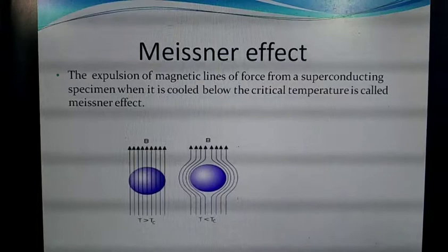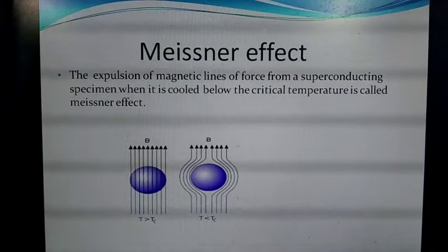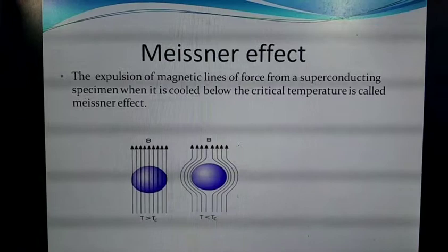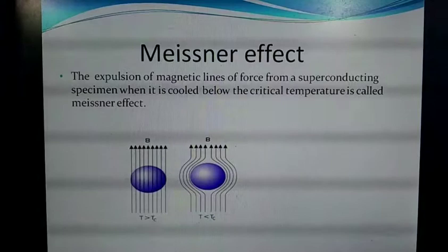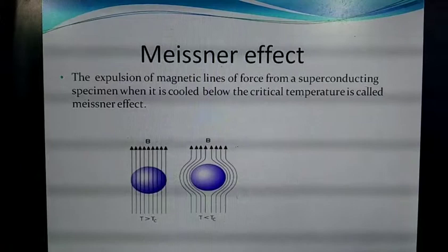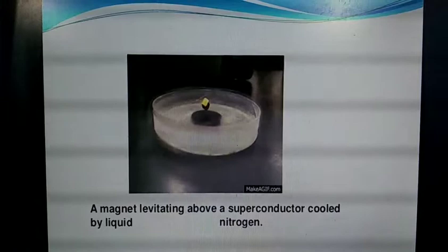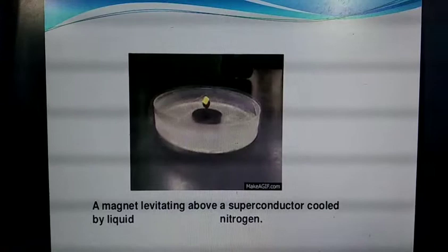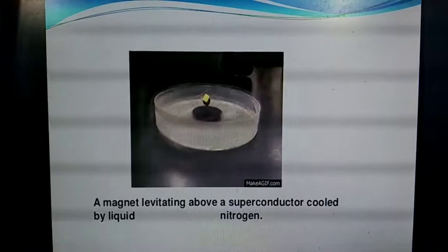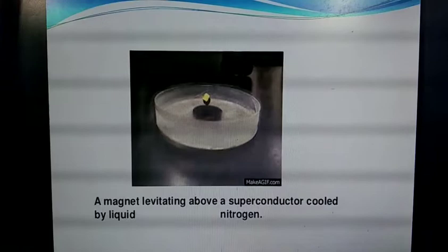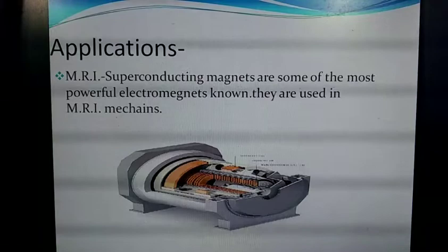The Meissner effect is the expulsion of magnetic lines of force from a superconducting material. As you can see in the diagram, at temperatures greater than the critical temperature, the magnetic field penetrates the material. But in a superconductor below the critical temperature Tc, the magnetic field does not penetrate. A real example of the Meissner effect is a magnet levitating above a superconductor cooled by liquid nitrogen.